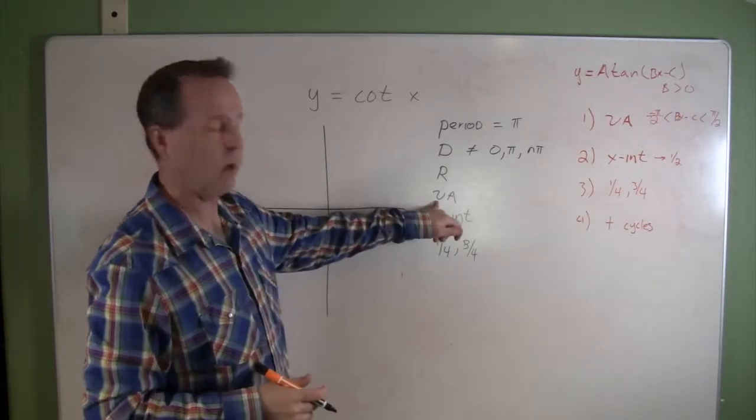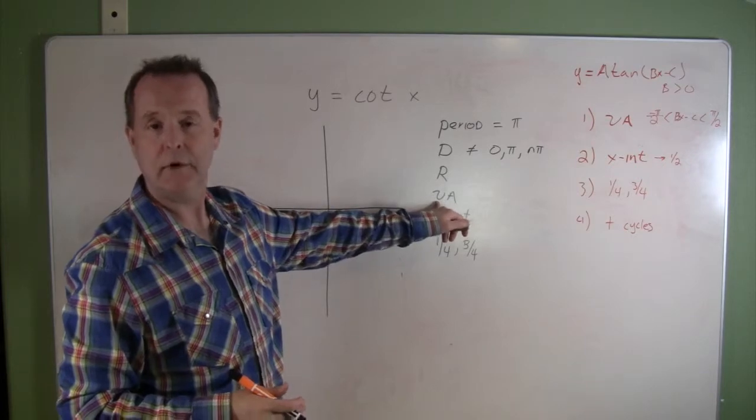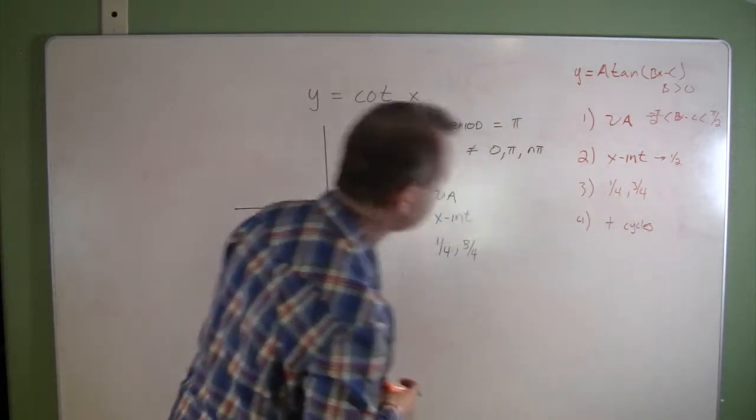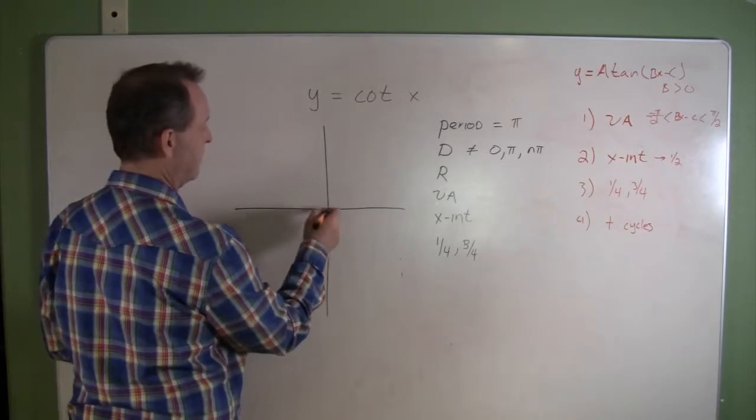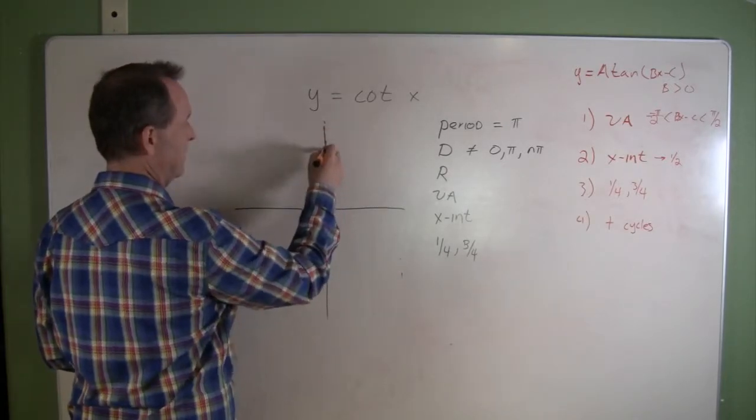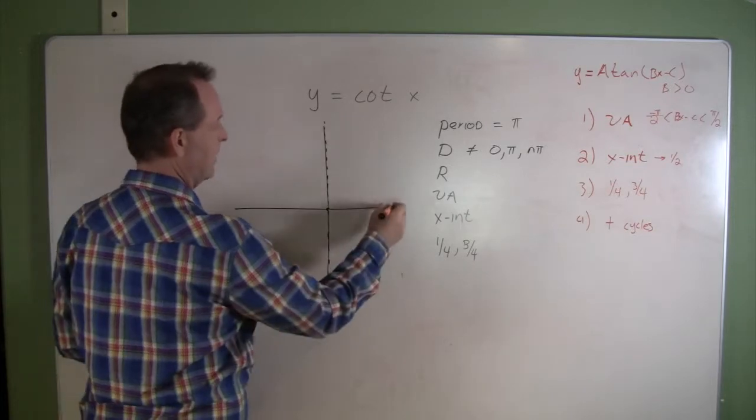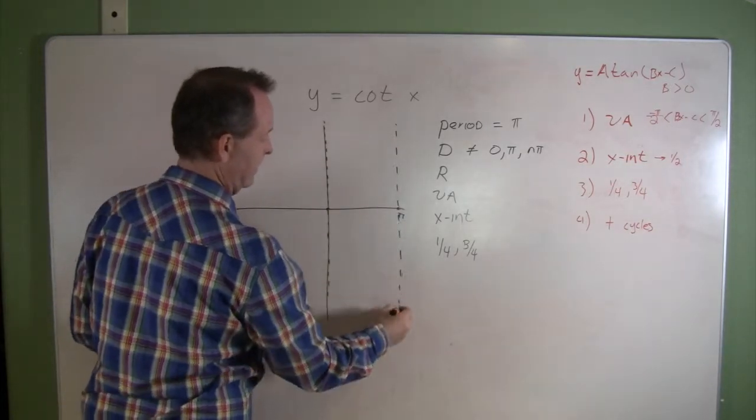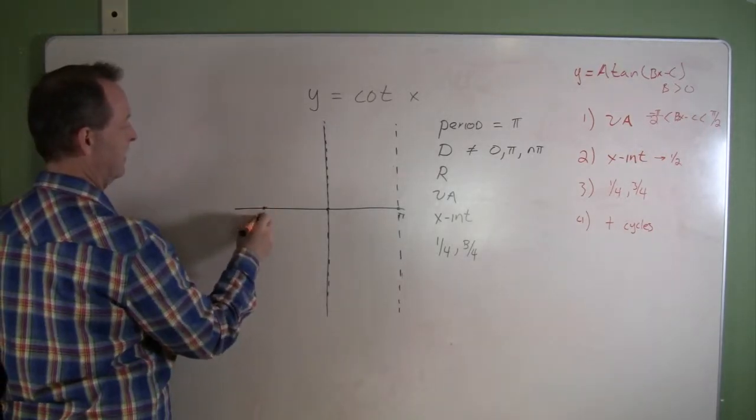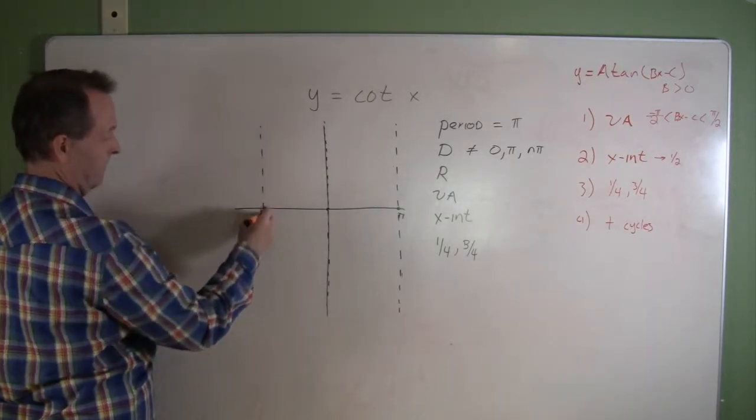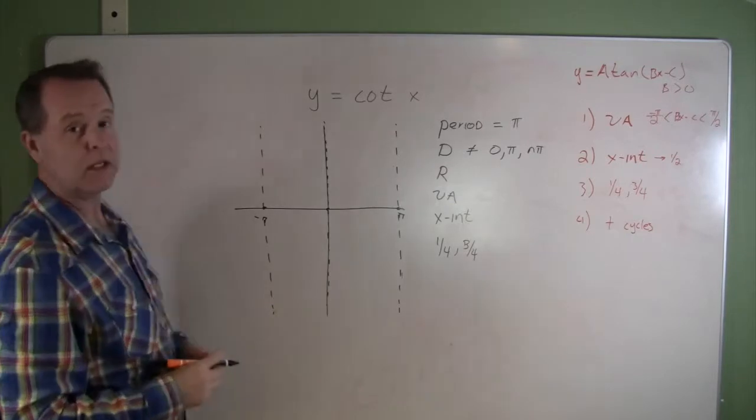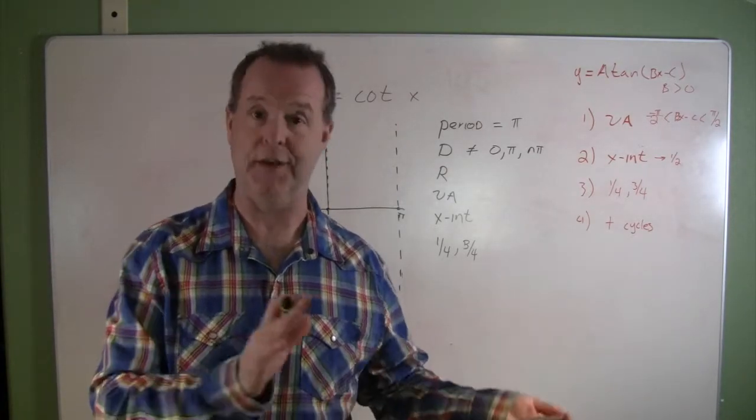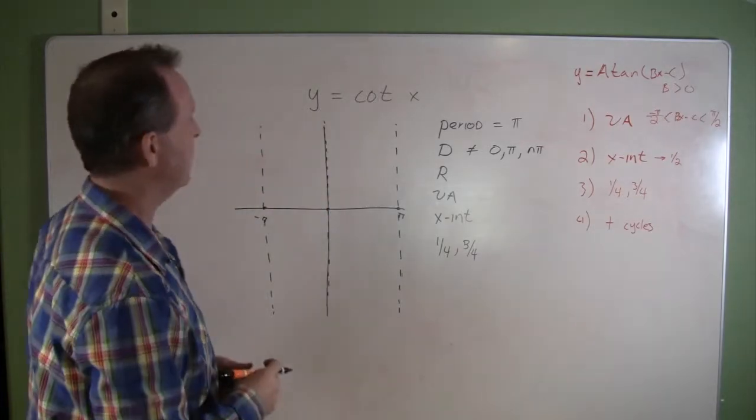And that tells us where its vertical asymptotes are. Vertical asymptotes are at the places where the graph is undefined. So the graph is undefined at 0, so we know this is a vertical asymptote. It's also undefined at π and at negative π, so not quite defined in the exact same places as tangent—it's shifted over a little bit.